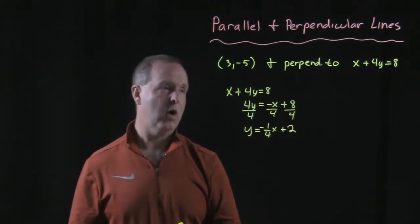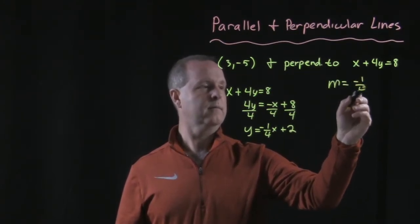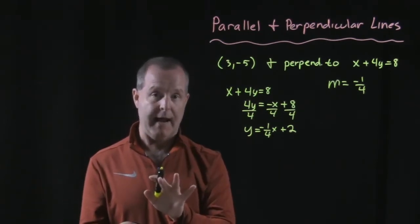All right. So the slope of this line is -¼. So what's the slope of the line perpendicular to that?